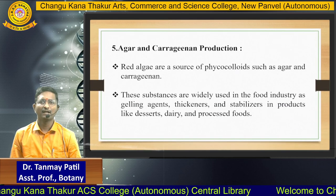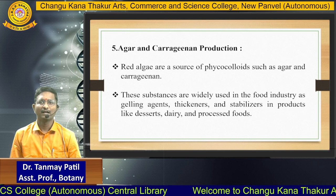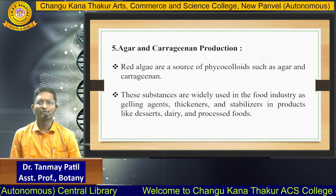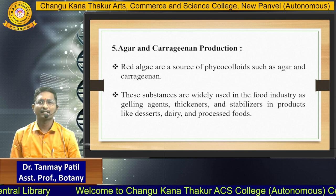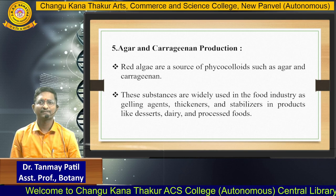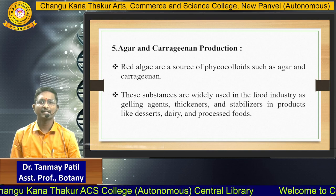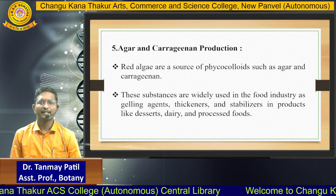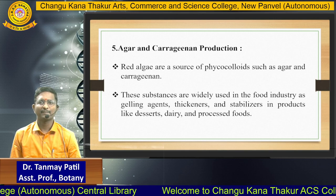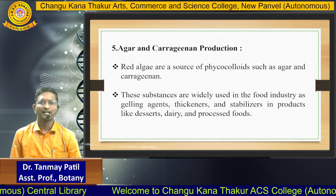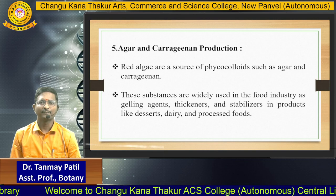Agar and Carrageenan Production: Red algae are a source of phycocolloids such as agar and carrageenan. These substances are widely used in the food industry as gelling agents, thickeners, and stabilizers in products like desserts, dairy, and processed food.